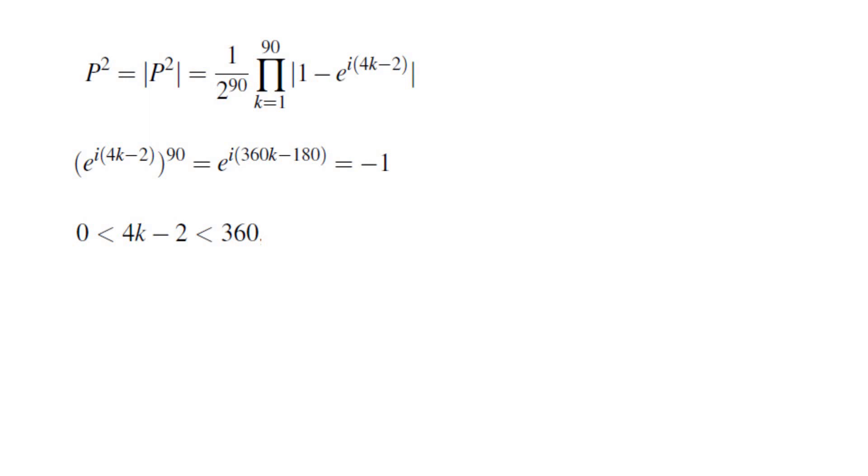In other words, these complex numbers e^(i(4k-2)) are distinct, which means I'm able to factor z^90 + 1 as the product of (z - these complex numbers).